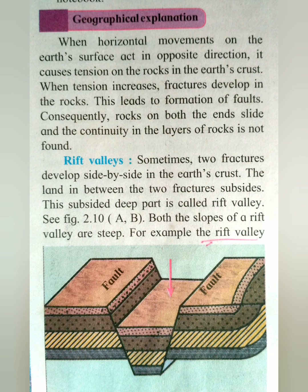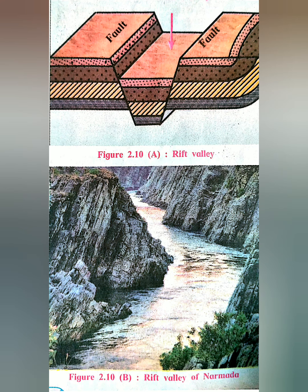Consequently, rocks on both ends slide and the continuity in the layer of the rock is not maintained. The rock which was uniform no longer looks the same — sometimes it is uplifted and sometimes it slides down. Sometimes two fractures develop side by side in the earth's crust, and the land in between the two fractures subsides — it moves downward. This subsided deep part is called a Rift Valley.